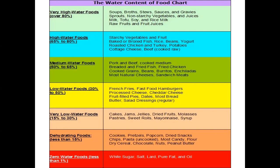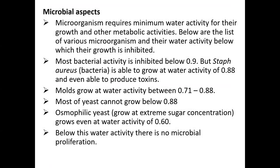Foods with less than 15 percent moisture include cookies, pretzels, popcorn, dried snacks, chips, pasta, most candies, flour, dry cereals, chocolates, nuts, and peanut butter. There is also a last category with less than 1 percent water — like sugar, salt, lard, pure fat, or pure oil — which all come under zero water food.